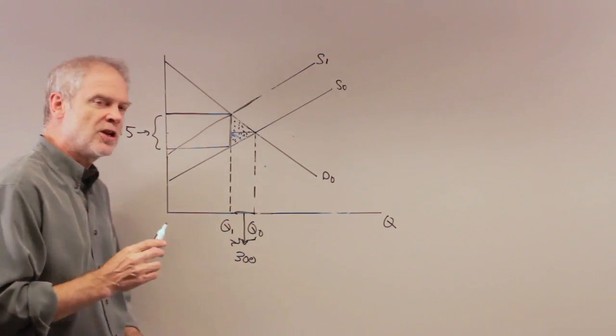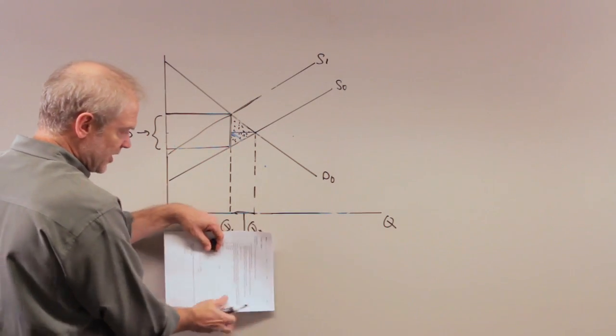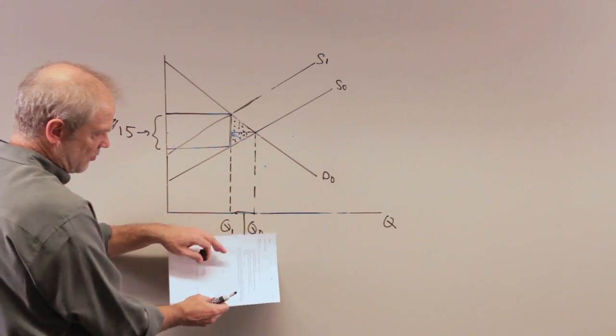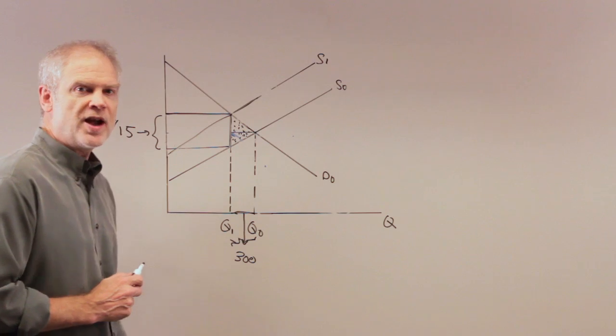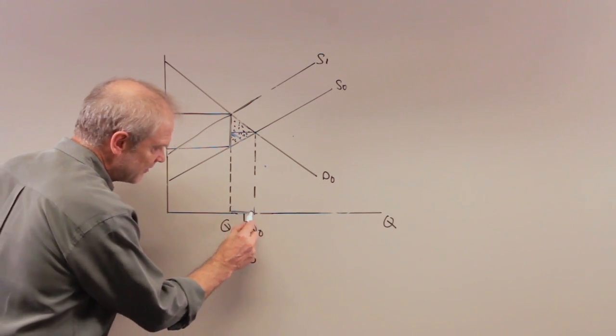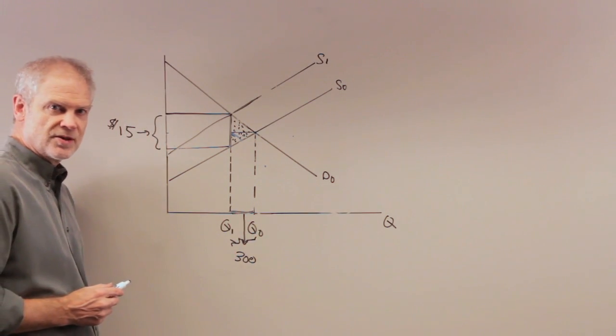They also tell us the equilibrium quantity. This is Q0 before the tax. This is Q1. It has fallen by 300 units. So we know this distance right here is 300 units. Okay?